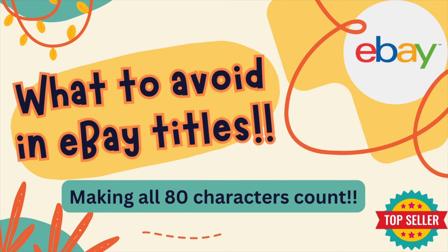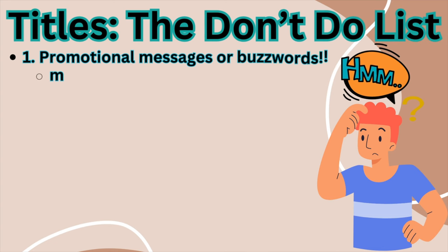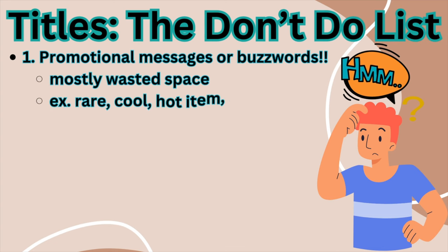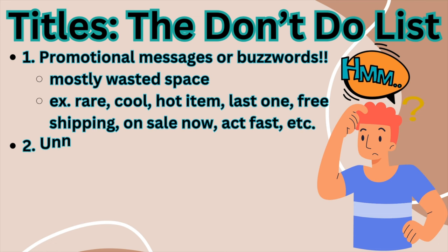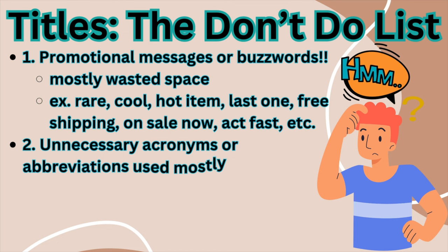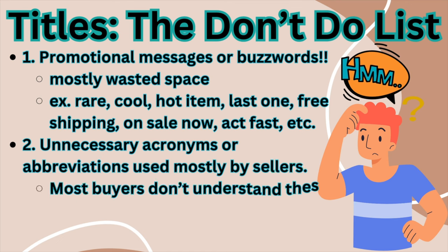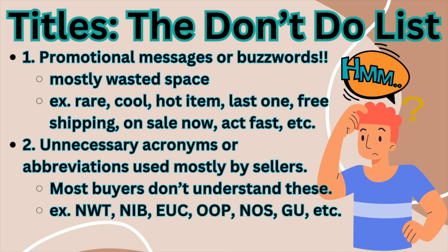Remember, you only get 80 total characters to put your title together — make all of them count. Do not waste valuable title real estate on unnecessary items. Number one: promotional messages or buzzwords should be avoided. They're mostly wasted space and include things like 'rare,' 'cool,' 'hot item,' 'last one,' 'free shipping,' 'on sale now,' 'act fast,' and many others. Number two: unnecessary acronyms or abbreviations mostly used by resellers should also be avoided — most buyers don't understand these. These include NWT (new with tags), NIB (new in box), EUC (excellent used condition), OOP (out of print), NOS (new old stock), and GU (gently used). If you must use these, write them out.